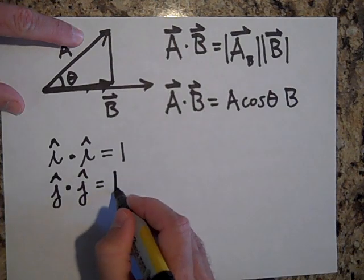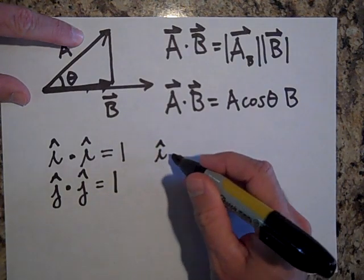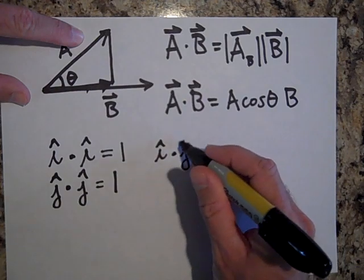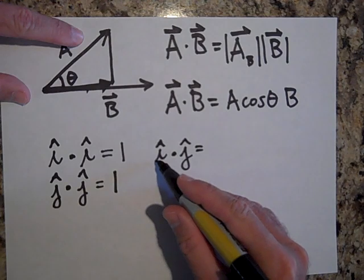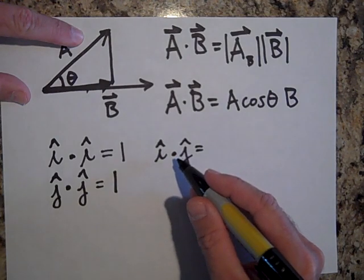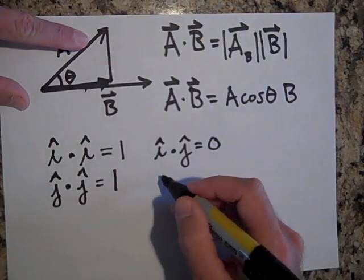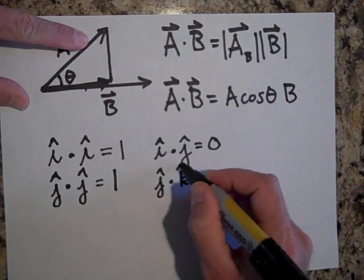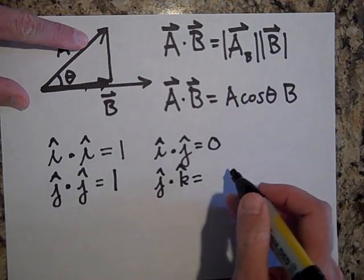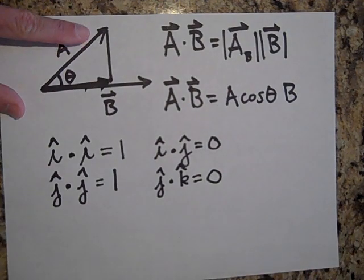How about when I dot product i dot j, what is that going to give me? Well how much of i is in the direction of j? Absolutely none of it so that gives me zero. How about j dot k? K is in the z direction, that's going to give me zero. So that's what I'm talking about.